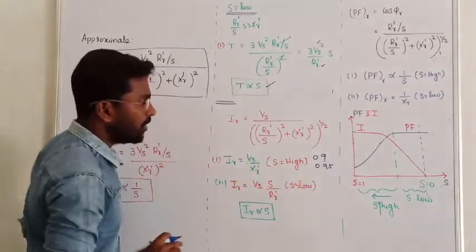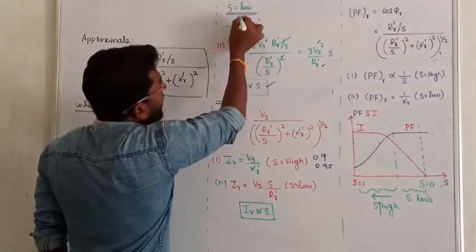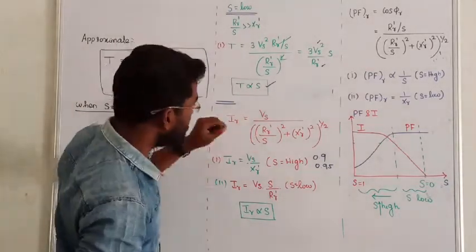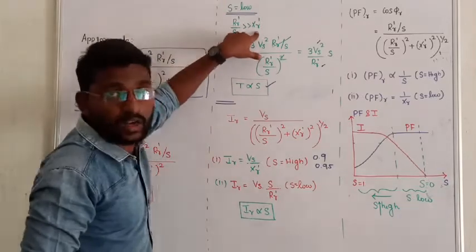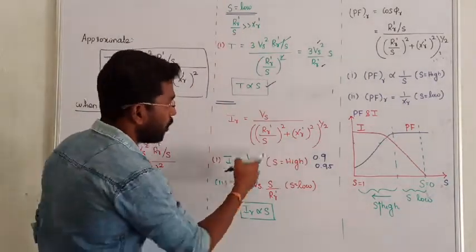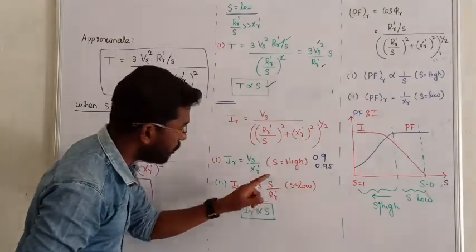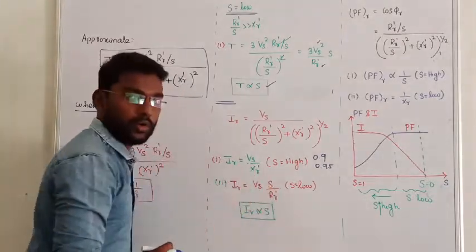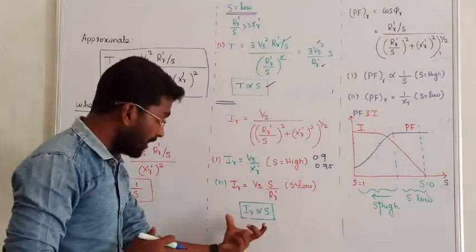When slip is low, rotor current low zone: here XR is neglected. So we are left with Vs divided by RR' by S, and from the denominator RR' by S the terms simplify, giving rotor current directly proportional to slip. So the conclusion is: rotor current is directly proportional to slip in the low slip zone.